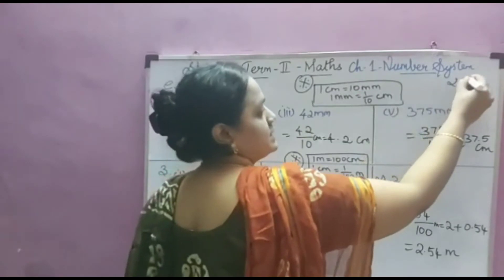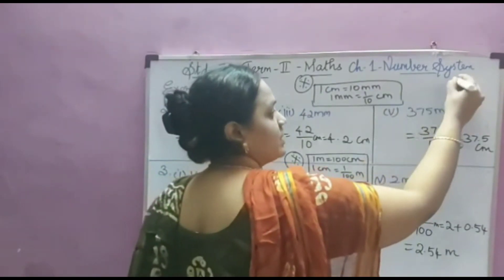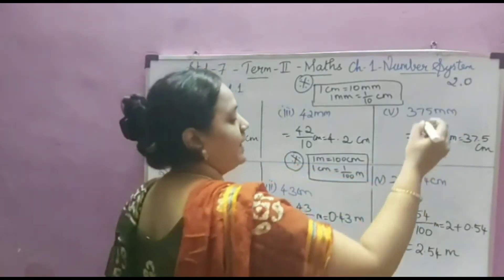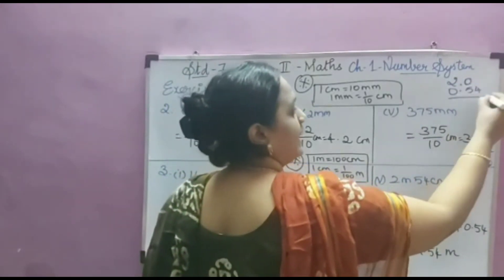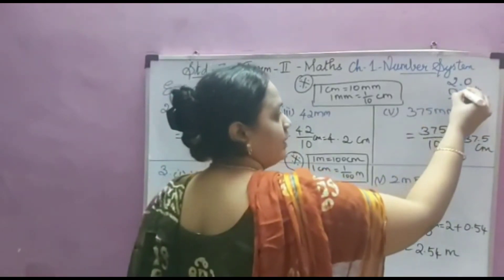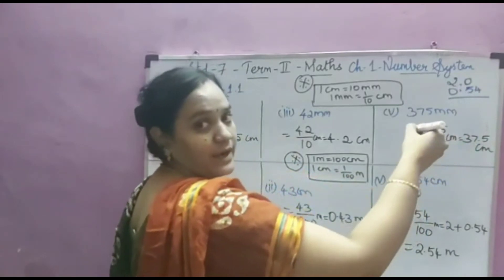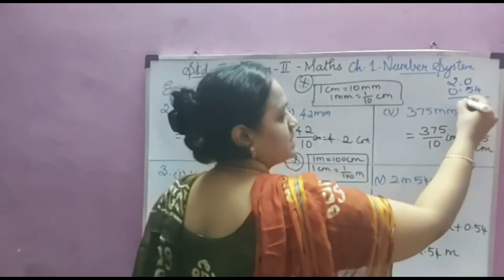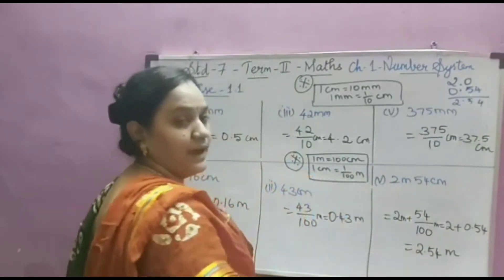2 means 2.0 — whenever we have a whole number part, we should assume it has .0. Adding 0.54: when adding decimal numbers, keep the point first and then write the numbers according to place value. Adding gives 2.54 as the answer.